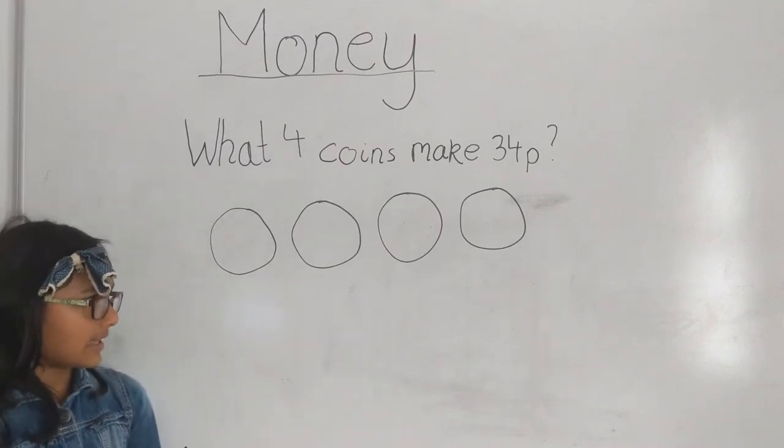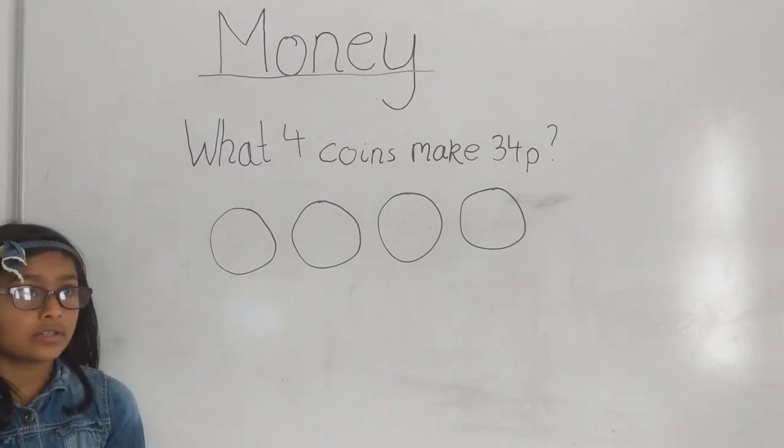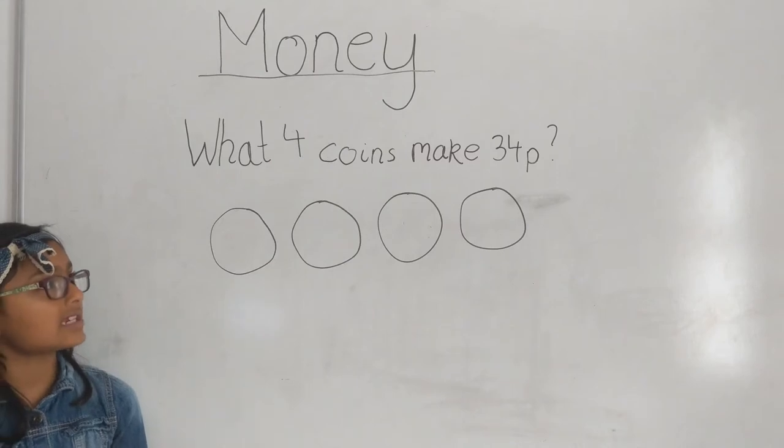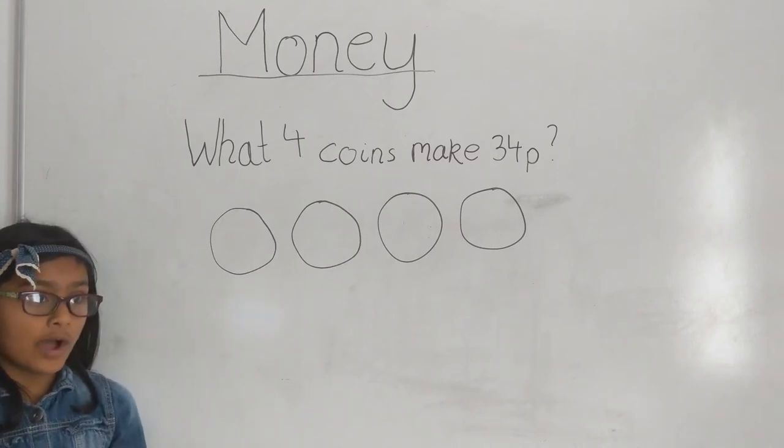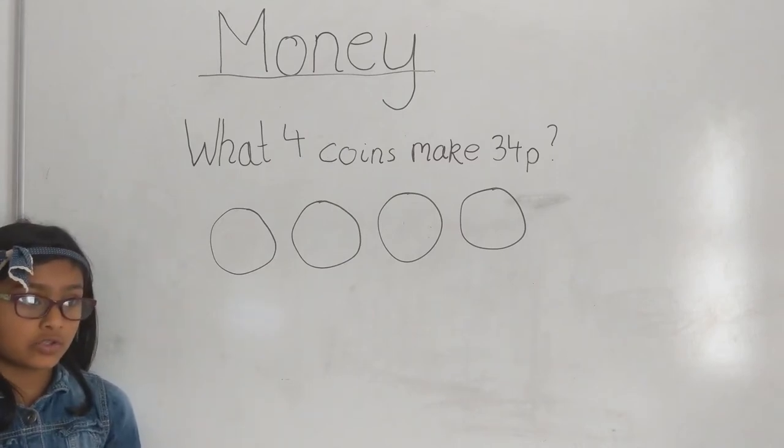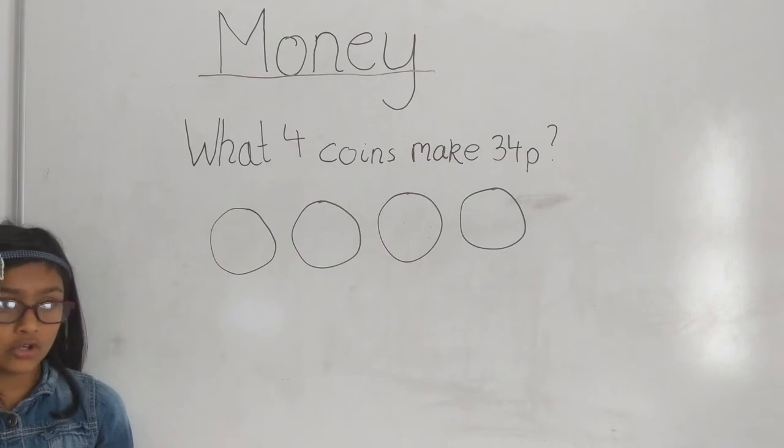What 4 coins make 34p? We're going to find the numbers that make 30 first. So 1 add 2 equals 3 and we have to add a 0 to make 30.